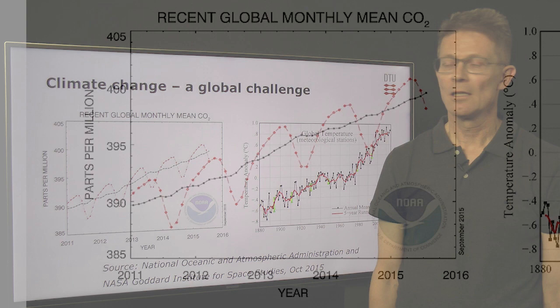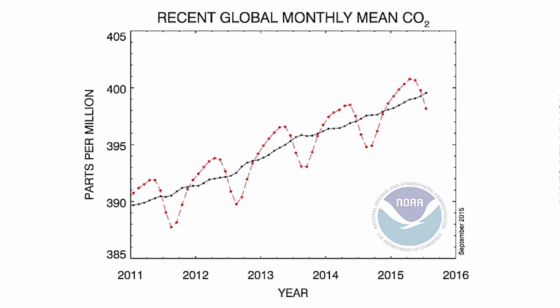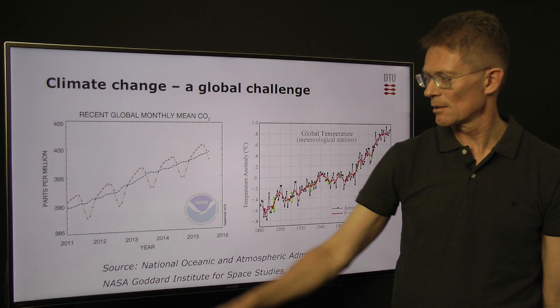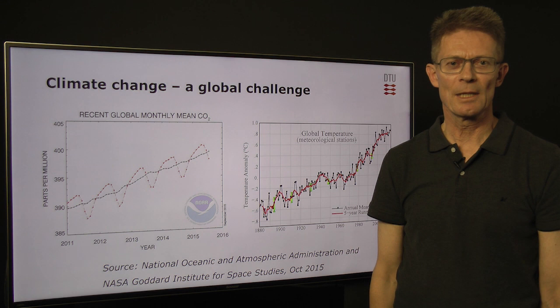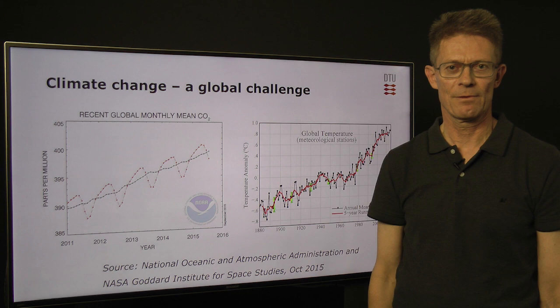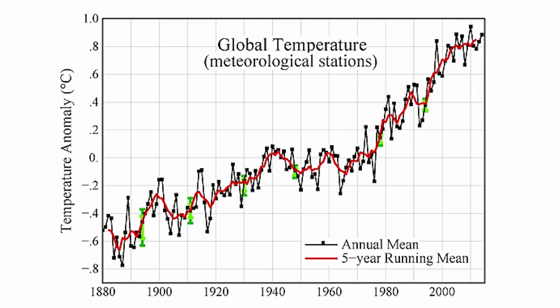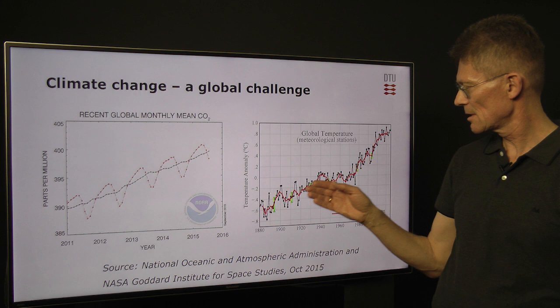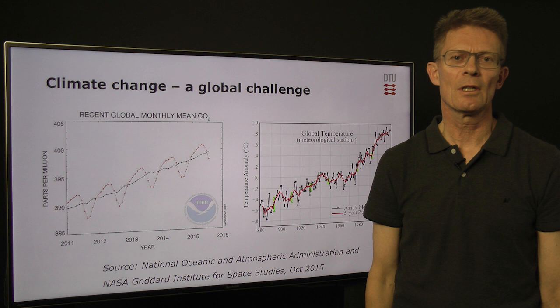First, we will look at the global challenges of climate change. On the left-hand side, you can see the global monthly mean of CO2 in the atmosphere of the Earth, and you can see that it is increasing gradually from 390 to 400 parts per million. The red curve shows that the CO2 content is increasing in the wintertime and decreasing in the summertime when photosynthesis is active. On the right-hand side, you can see the increase of global temperature from all the meteorological stations in the world, from 1880 to 2015, showing that the global mean temperature is increasing over those 135 years by 1.4 degrees Celsius.